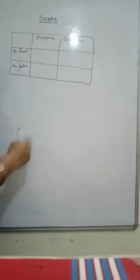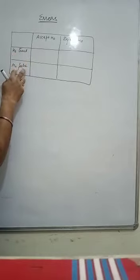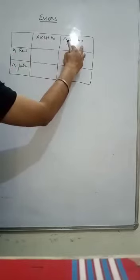I have to make a simple table to remember. x is 0 true, x is 0 false, accept x is 0 and reject x is 0.